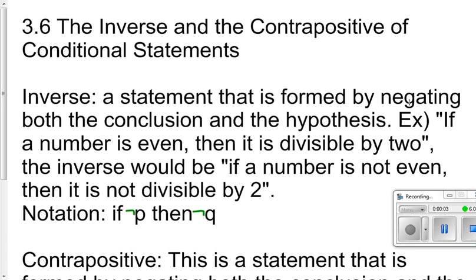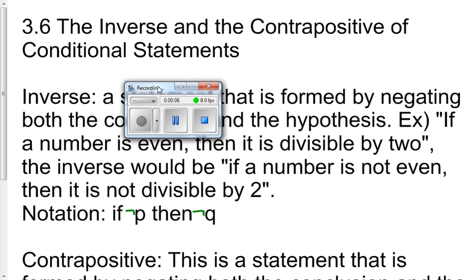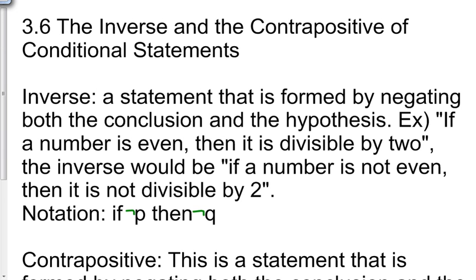Section 3.6 is titled the inverse and the contrapositive of conditional statements. An inverse is a statement that is formed by negating both the hypothesis and the conclusion. For example, if a number is even then it is divisible by 2. The inverse would be: if a number is not even then it is not divisible by 2. The notation is: if not p then not q.